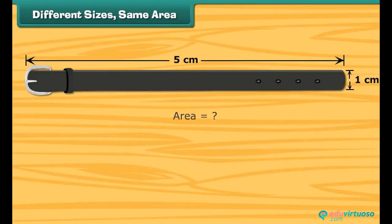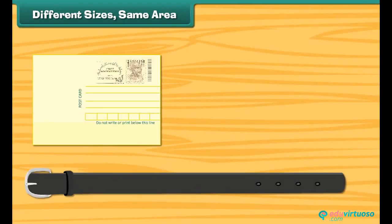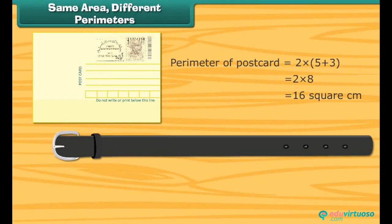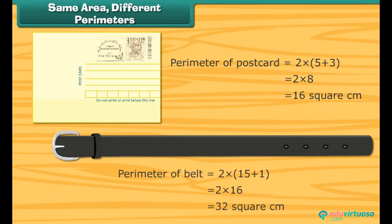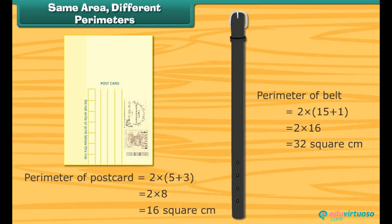Look at this postcard. Its area is equal to 15 square centimeters. What about the area of this belt? It is also 15 square centimeters. Both postcard and belt are of the same area, but their sizes are different. The perimeter of the postcard is 16 centimeters, while the perimeter of the belt is 32 centimeters. Thus, things with the same area can take different forms, and their perimeters can be same or different.